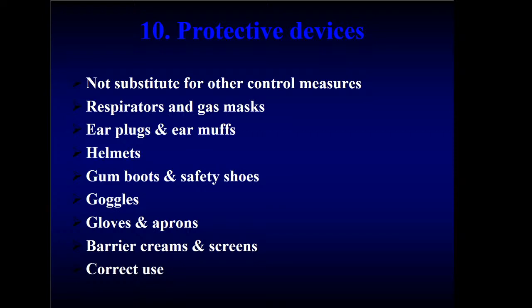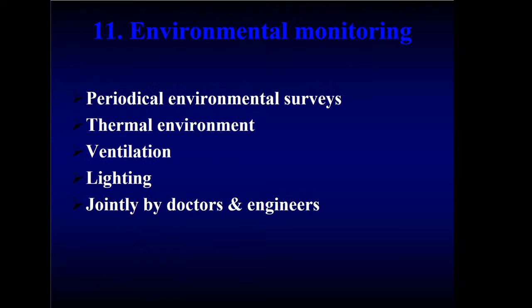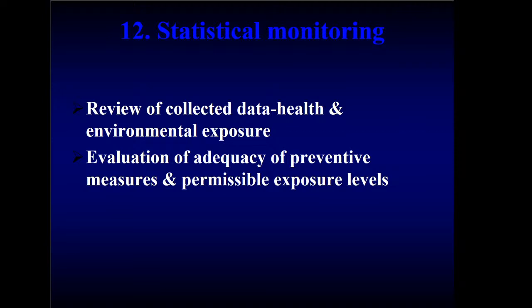Personal protective equipment includes body clothing for protection against heat, gum boots, safety shoes, goggles, gloves, aprons, barrier creams, and screens — all must be correctly used. Environmental monitoring is also important, with periodical environmental surveys. Thermal environment must also have adequate ventilation and lighting. Statistics must be correctly compiled and sent to concerned authorities — for the factory's own monitoring and for the government to be aware of problems in the industry.